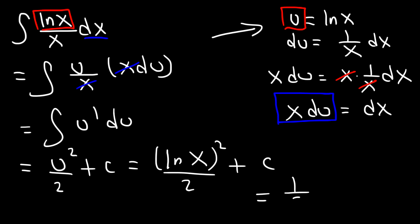If you want to, you can write your answer like this: one half times (ln x) squared plus c. It looks better like that, but now you know how to find the integral of ln(x) divided by x.